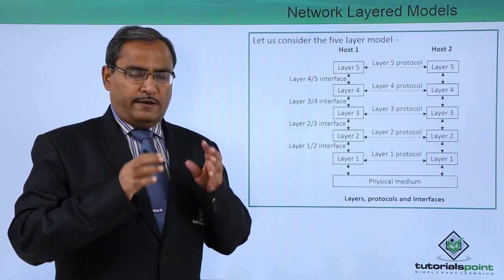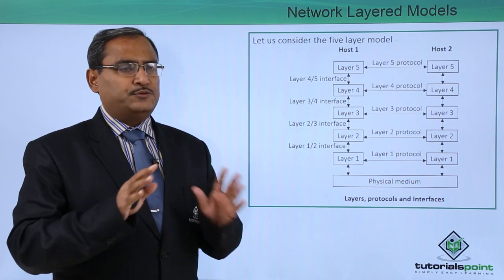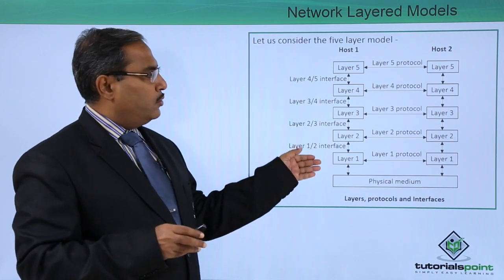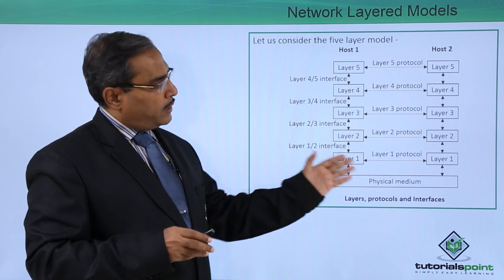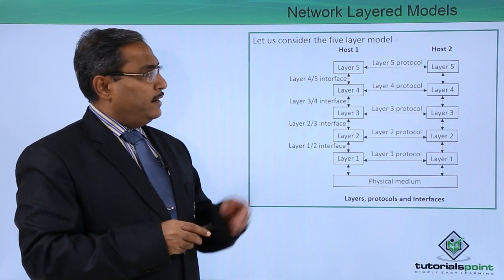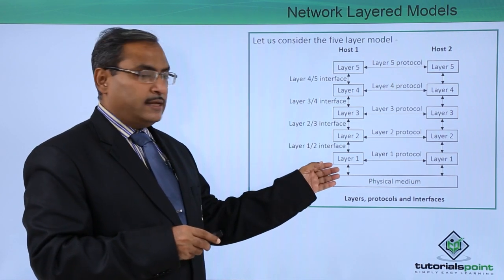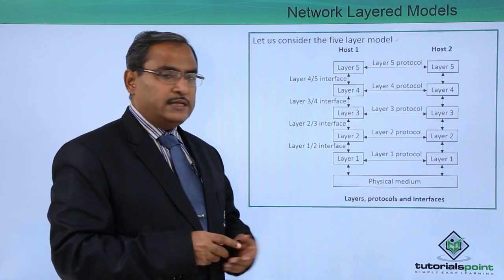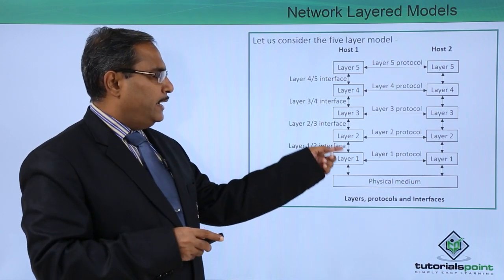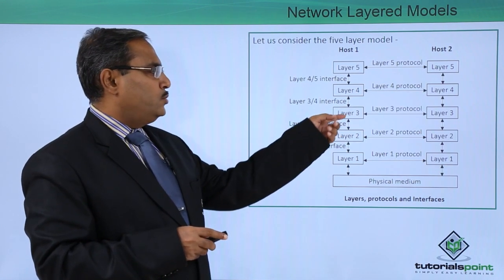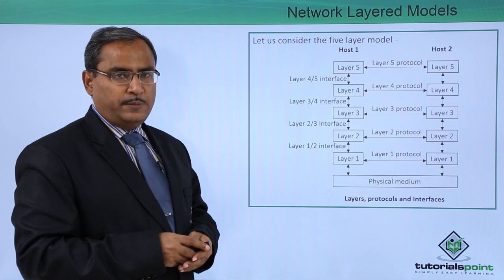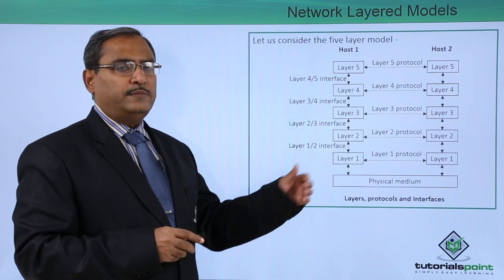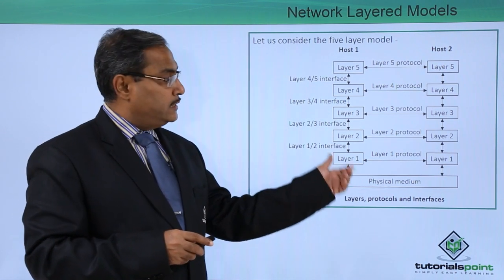In this diagram we have considered a 5-layer model — it is totally one abstraction. Host 1 and host 2 are doing the communication; there are 5 layers: layer 1 through layer 5. Layer 5 is the highest layer and layer 1 is the lowest layer, connected with the physical medium. We can see the interface between layer 1 and 2, and between layers 2 and 3. Layer 1 protocol guides the rules and regulations to be followed in that respective layer.